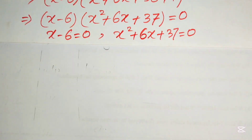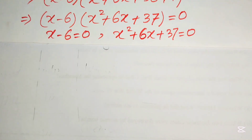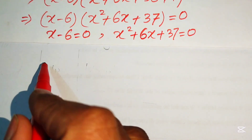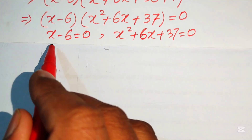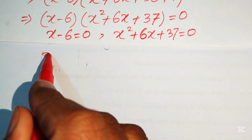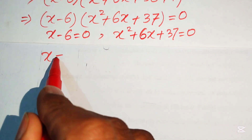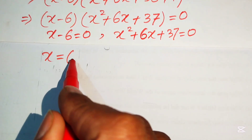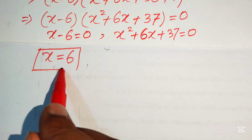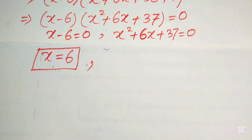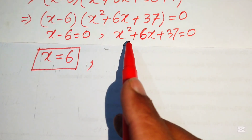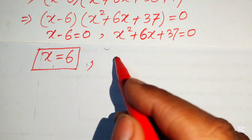From the first case, moving minus 6 to the right-hand side gives us the first real root: x equals 6. Now we solve the quadratic equation x² plus 6x plus 37 equals 0.